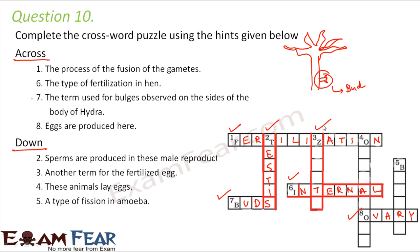Number three down: another term for the fertilized egg. Once the egg gets fertilized by the sperm it is called a zygote, so the answer is zygote. Number four down: these animals lay eggs — such animals are called oviparous. An example of oviparous animals would be a hen, because they lay eggs and do not give birth to young ones directly.